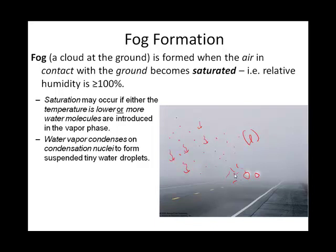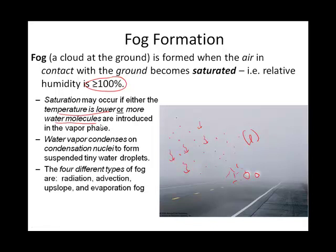In order to reach 100% relative humidity or saturation, two things can occur, as discussed in Chapter 4. We can either lower the temperature, or we can introduce more water vapor into the atmosphere in order to get it saturated to form the fog. There are four different types of fog: radiation fog, advection fog, upslope fog, and evaporation fog.